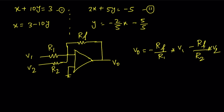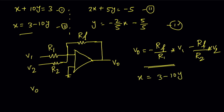So what we need to do is compare this adder output equation with equation 3 and equation 4. Then we will get the values of Rf, R1, V1, R2, and V2, and we can draw two circuits and cascade them. If I compare the adder formula with equation 3 — x = 3 - 10y — then V0 will be x.